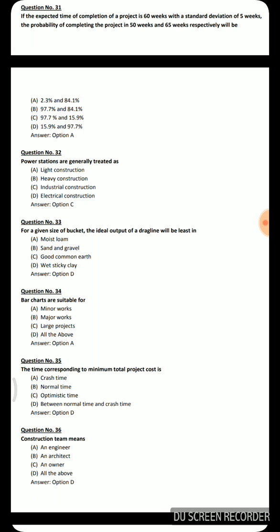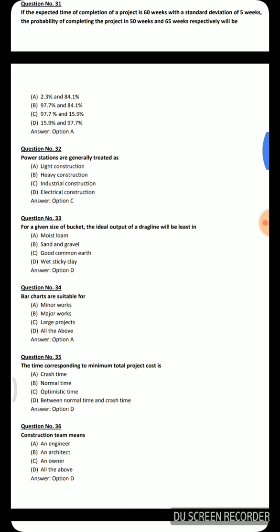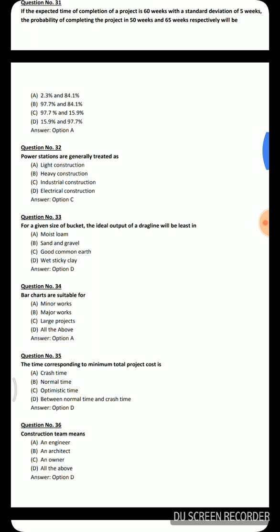Next question: For a given size of bucket, the ideal output of a dragline will be least in — moist loam, sand and gravel, good common earth, or wet sticky clay. The correct answer is option D: wet sticky clay. Next question: Bar charts are suitable for — minor works, major works, large projects, or all of the above. The correct answer is all of the above.